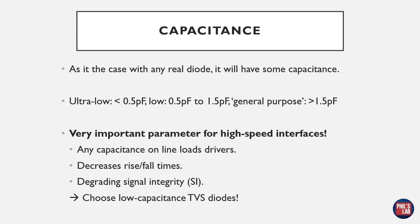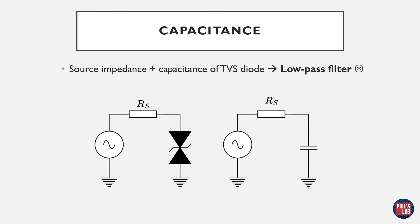Therefore we want to choose low-capacitance TVS diodes for high-speed interfaces such as HDMI, USB 2, USB 3, and so forth. Another way of looking at this is that the source impedance of a driver, perhaps in combination with the transmission line, forms a low-pass filter together with the TVS diode capacitance, which isn't ideal in high-speed cases.